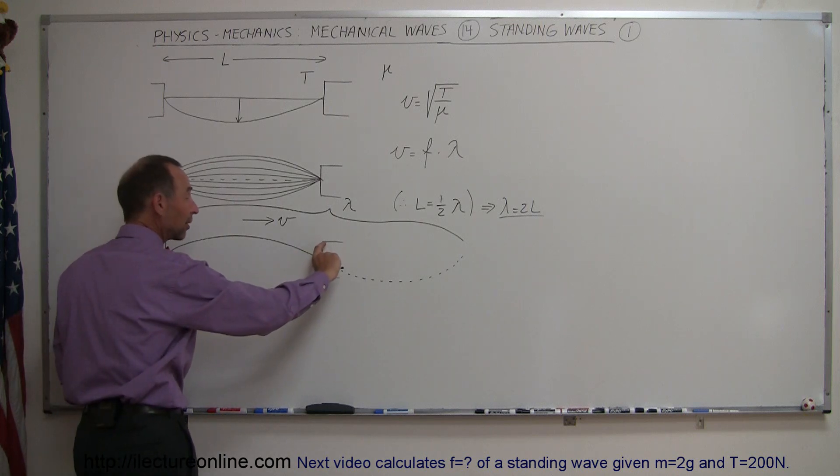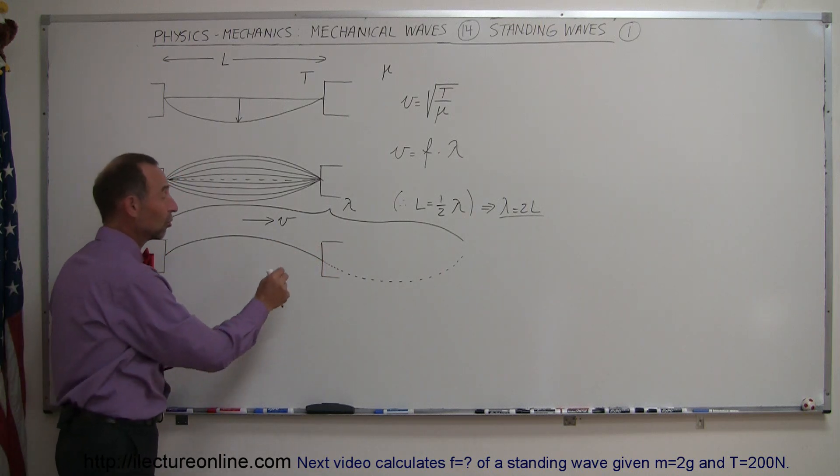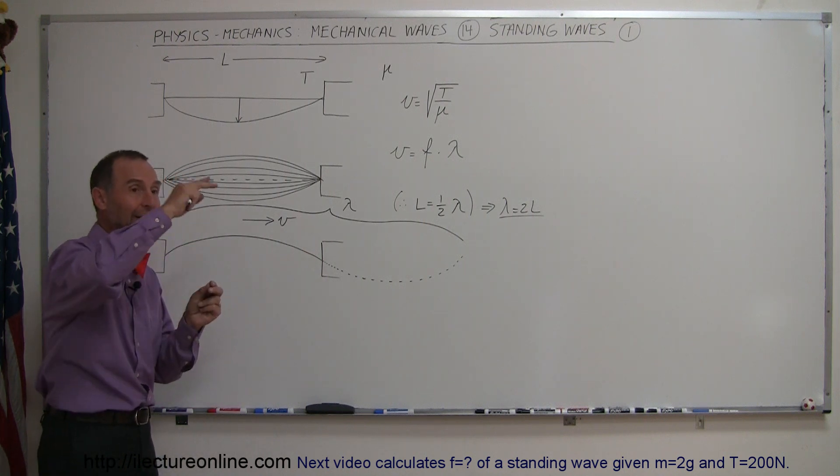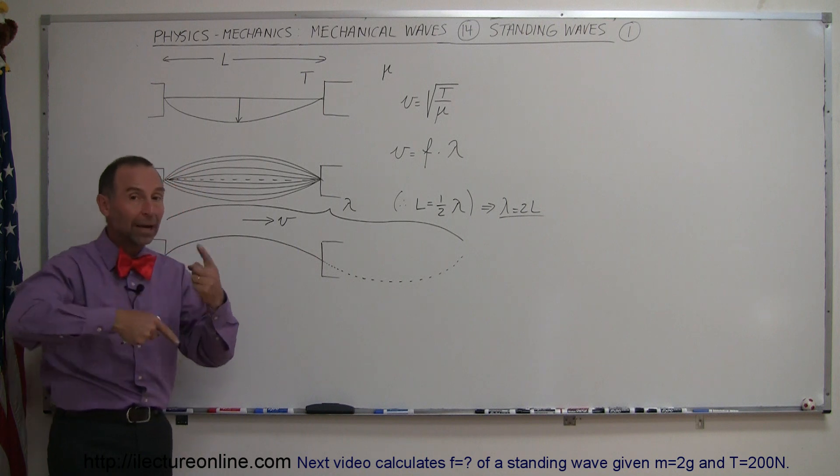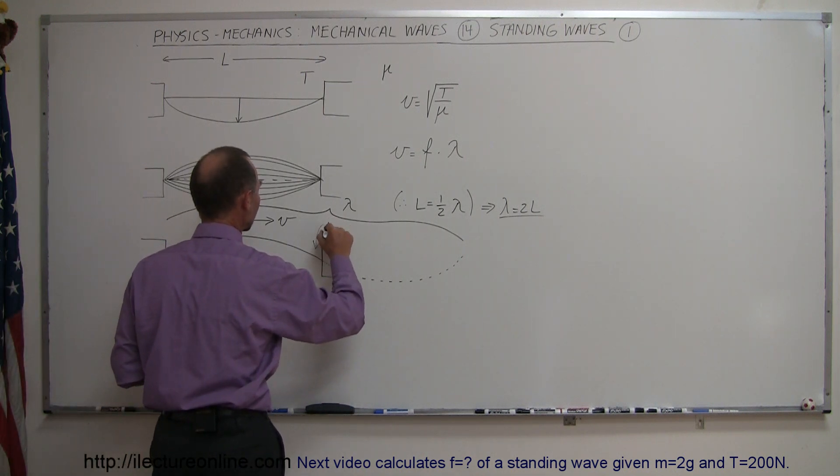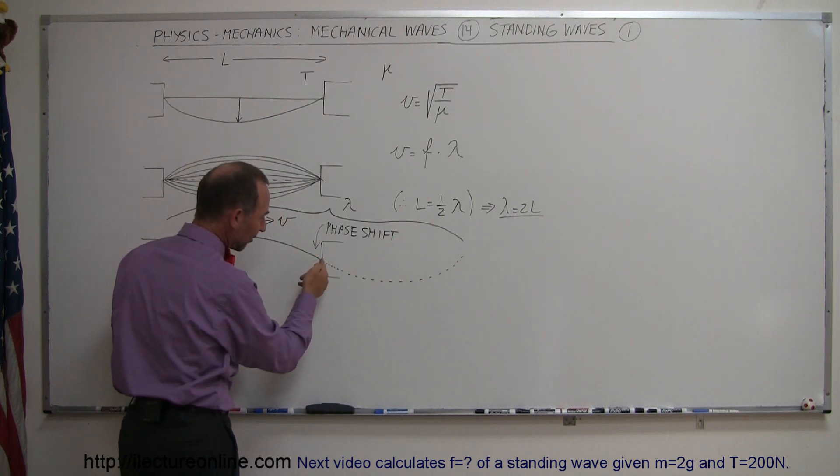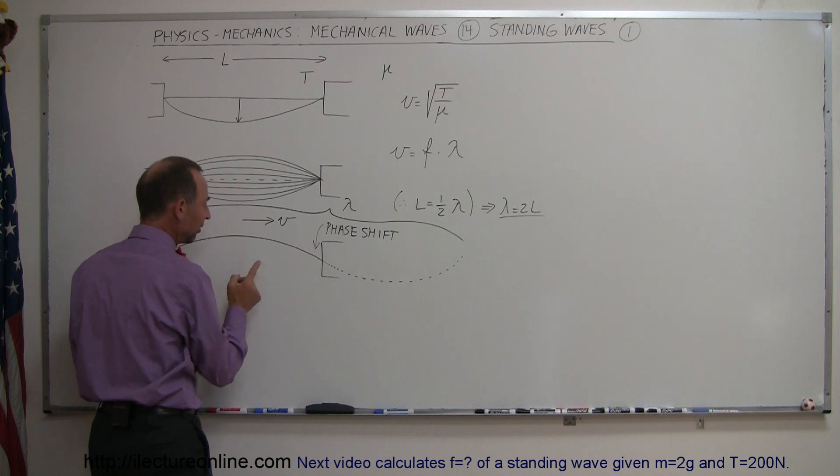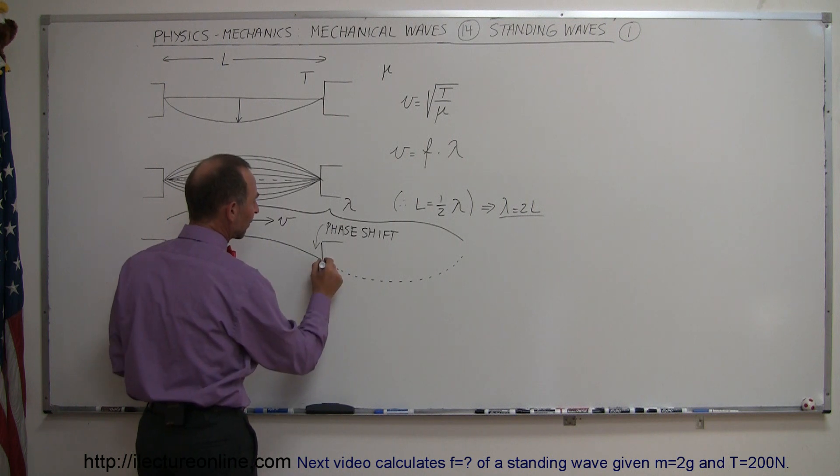But since the density of the barrier is greater than the density of the string, and since the string is attached to the barrier so it can't flop up and down, when it goes in the opposite direction, there will be a 180 degrees phase shift. So instead of going on the way it would and then simply coming back the other direction, it's going to reflect back and flip 180 degrees.